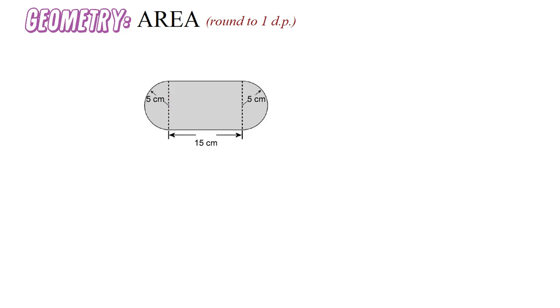We know that the formula for the area of a rectangle is length times width. We've got the length, which is 15, and we just have to find the width. We're not explicitly given the width, but we can figure it out.